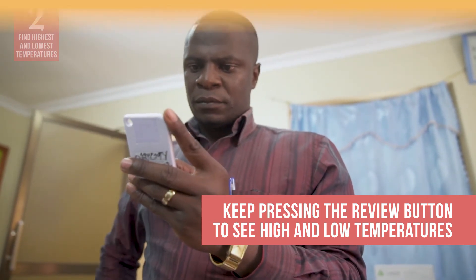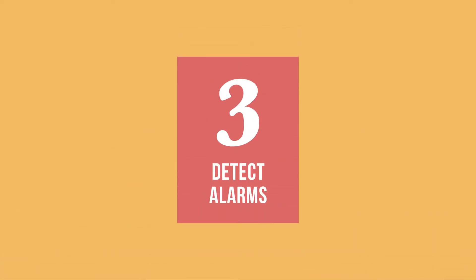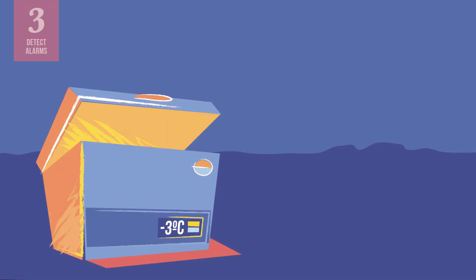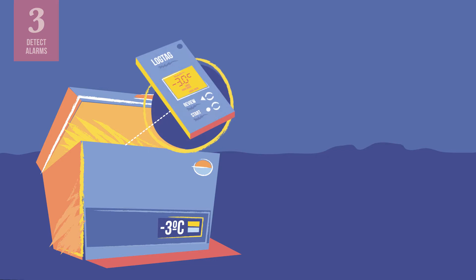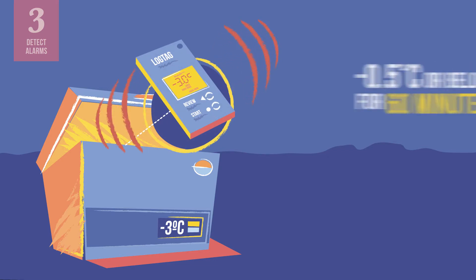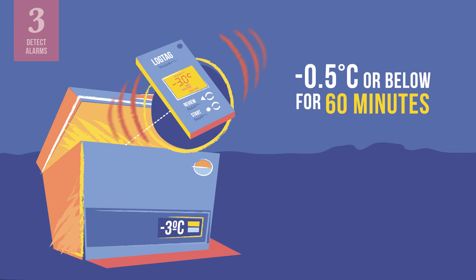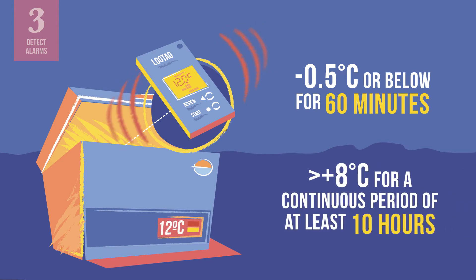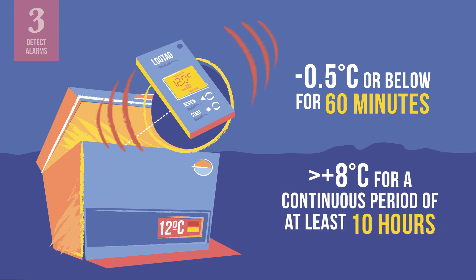You can keep pressing the review button to see high and low temperatures going back day by day for the previous 29 days. The third task is to determine whether any temperature alarms have been triggered and when. Typically, a 30DTR such as the log tag triggers an alarm if refrigerated temperatures fall to negative 0.5 degrees Celsius or below for 60 minutes, or if the temperature exceeds 8 degrees Celsius for a continuous period of at least 10 hours.